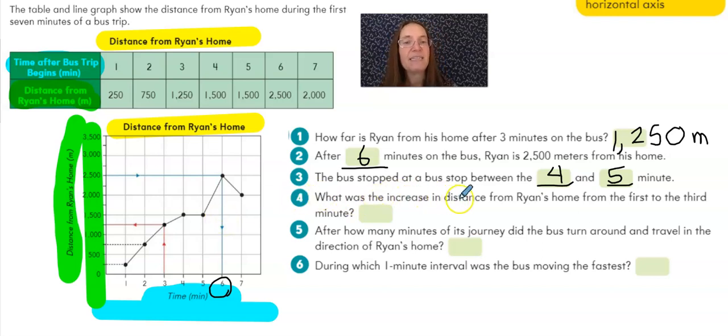What was the increase in distance from Ryan's home from the first to the third minute? Well, he starts at 250 meters from home, and he goes to 1,250 meters from home right here. 1,250 minus 250 is 1,000. So we could say that he had increased his distance from home by 1,000 meters.